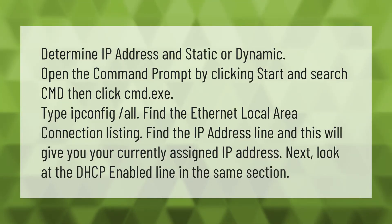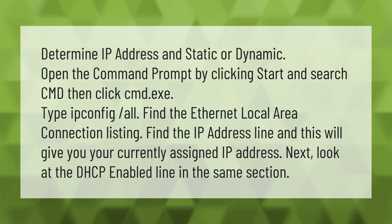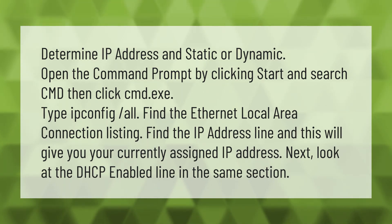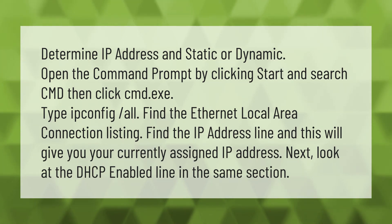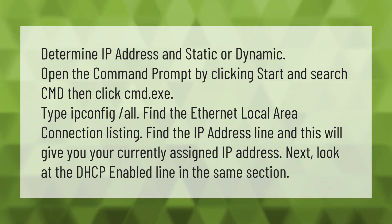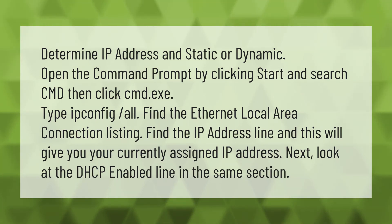To determine your IP address and whether it is static or dynamic, open the command prompt by clicking Start, searching for cmd, and clicking cmd.exe. Type 'ipconfig /all', then find the Ethernet Local Area Connection listing. Find the IP Address line to see your currently assigned IP address, and check the DHCP Enabled line in the same section.